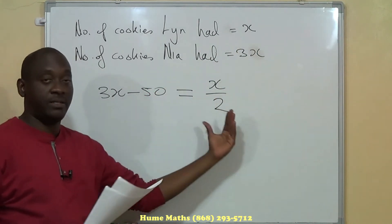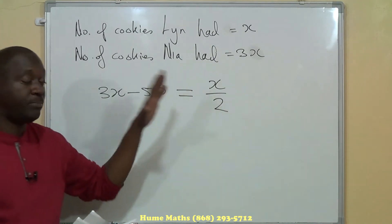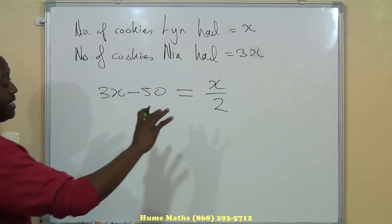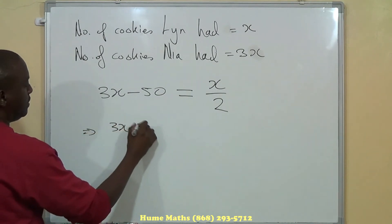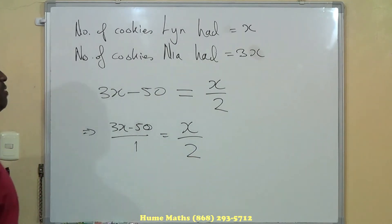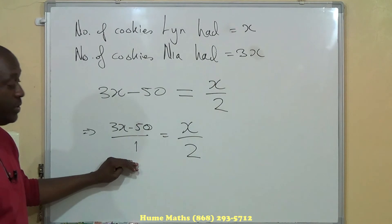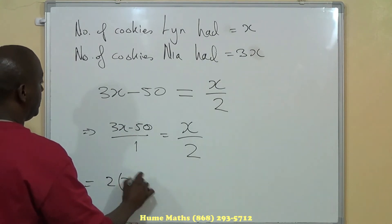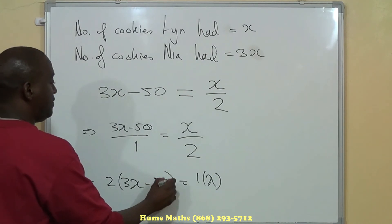So this is the equation. The hard part in this question is to get to this point — once you get here, the problem is pretty much over. So we solve it. We have 3X minus 50, and I write it like this: 3X minus 50 equals X over 2. Because we have a fraction here, X over 2, we write 3X minus 50 as 3X minus 50 over 1, which puts us in prime position to cross multiply.